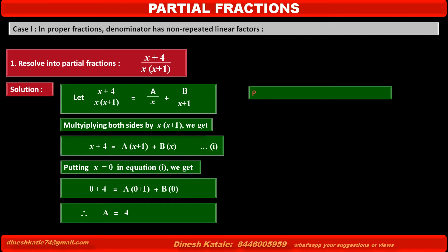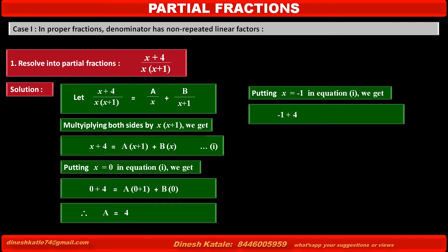Now, to find the value of B, we eliminate the A(x + 1) term. Therefore, substituting x + 1 = 0, that is putting x = −1 in equation 1, the left-hand side becomes −1 + 4, and the right-hand side becomes A(−1 + 1) + B(−1).